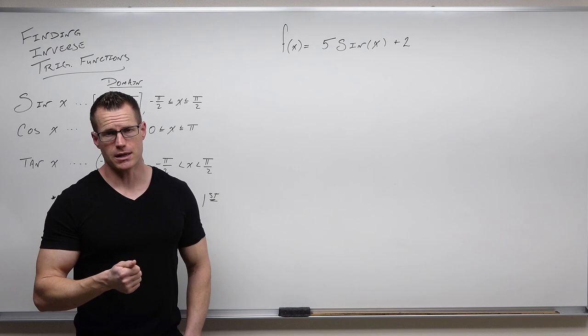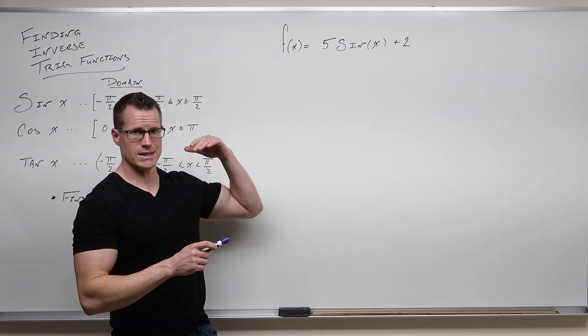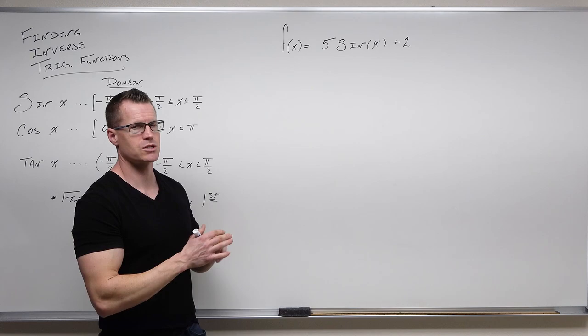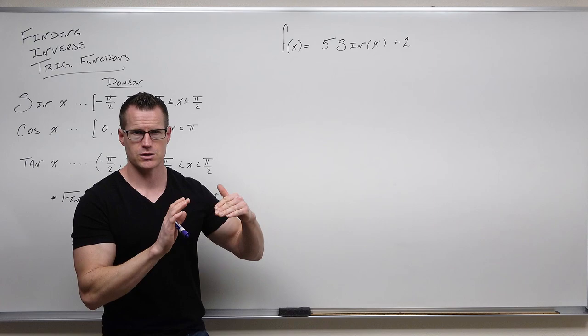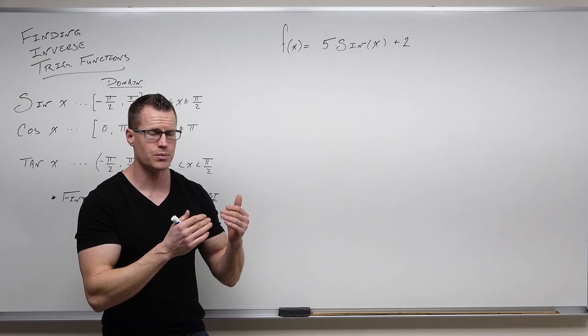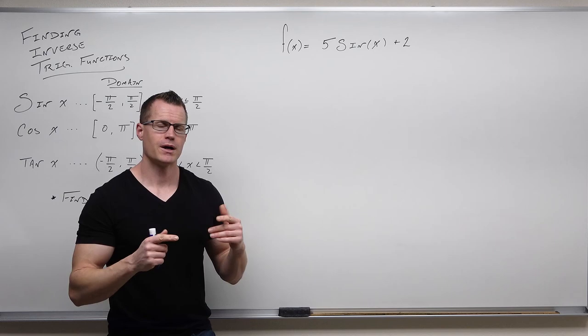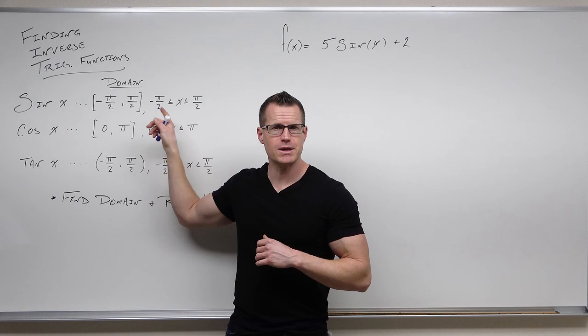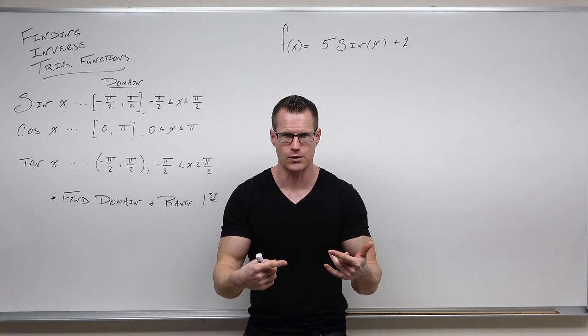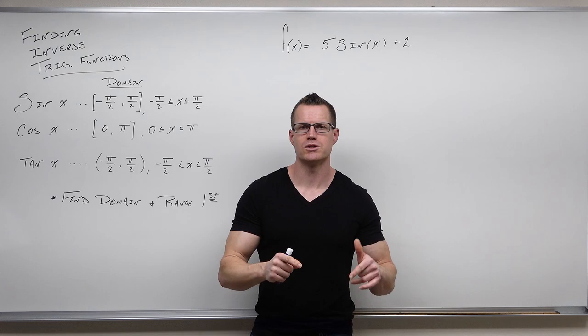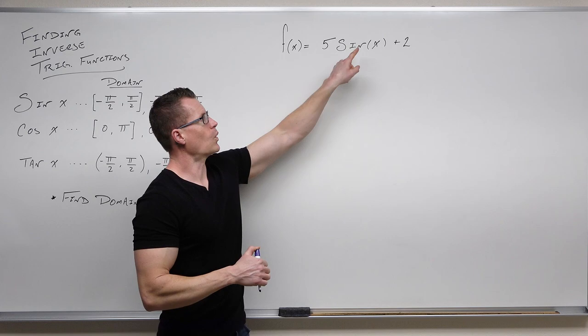Before we go anywhere when finding an inverse function, we want to find the domain and the range. For the domain, we look inside and identify what trig function we have — 5 sine x plus 2. That plus 2 is outside of the function, it's a vertical shift, so it's affecting the outputs, not affecting the domain. Since we have sine, we know the domain has to be negative π/2 to π/2 in order for us to be able to find an inverse function.